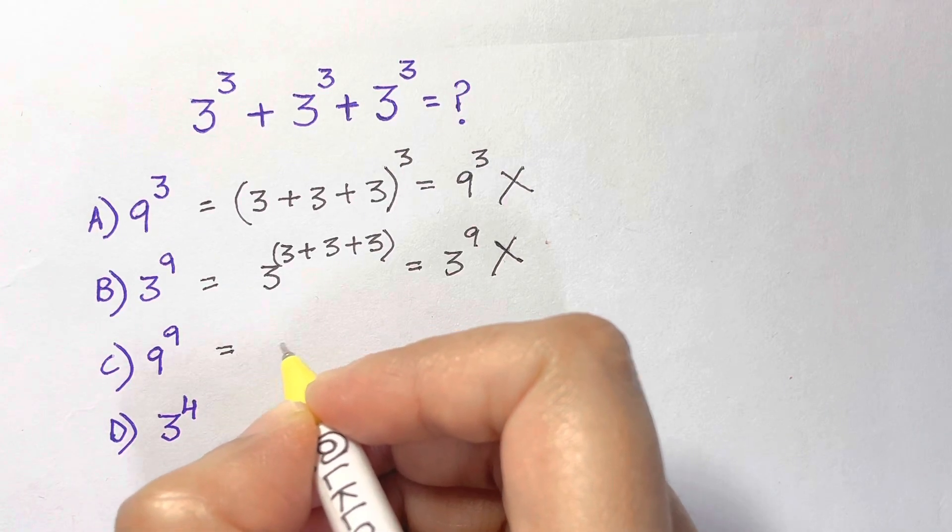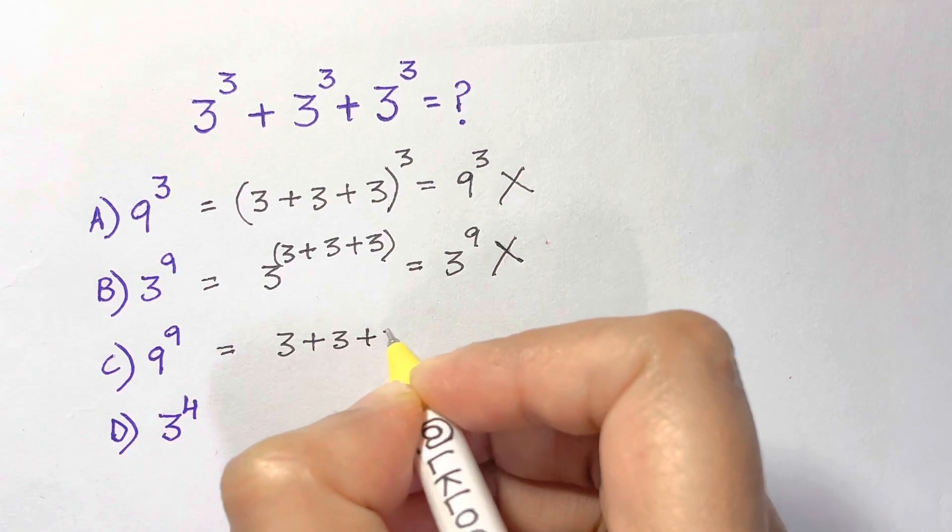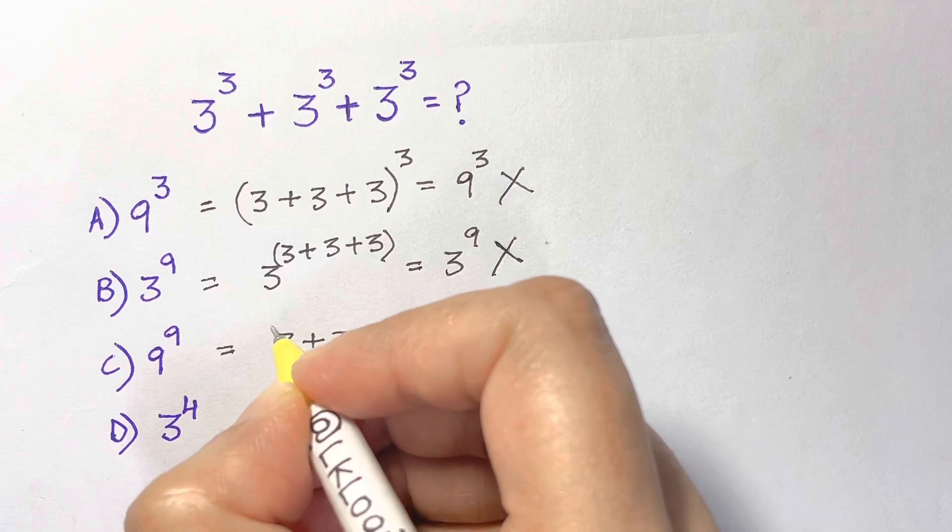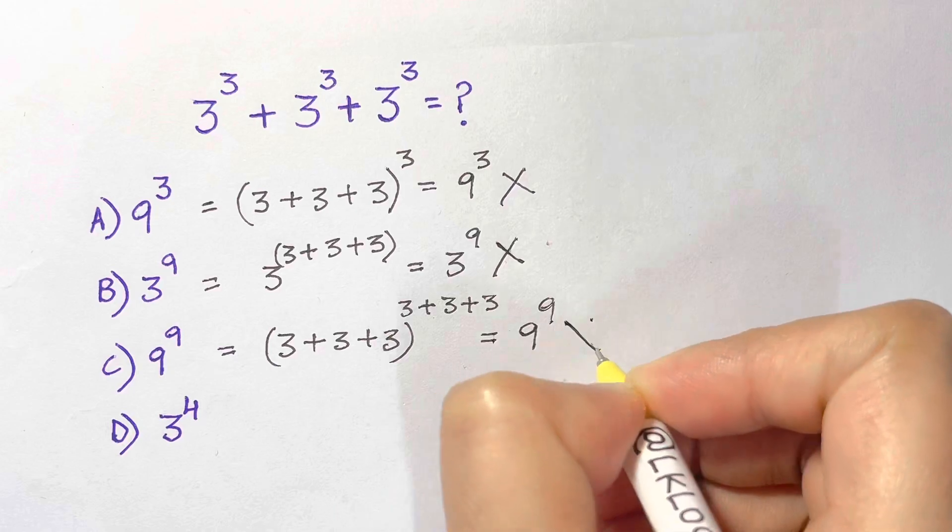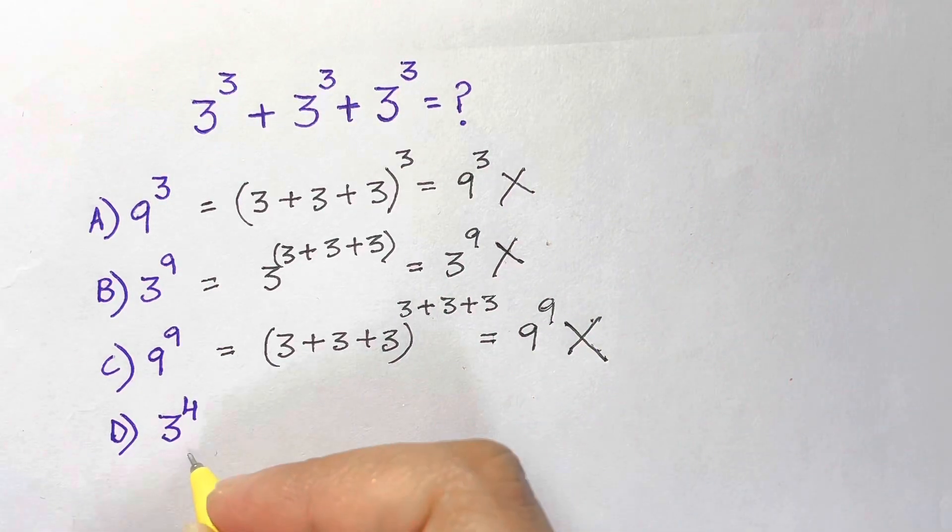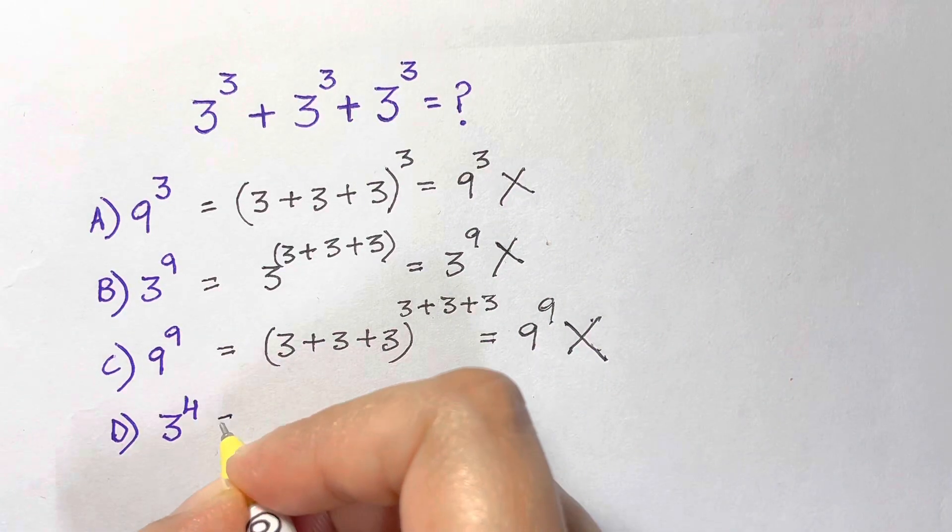9 to the power of 9 is sum of the bases plus the sum of the exponents, so that gives you 9 to the power of 9. Still it's wrong, so the right answer is D: 3 to the power of 4. How do we get that?